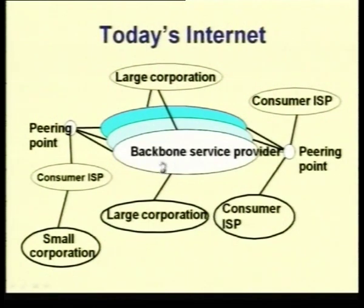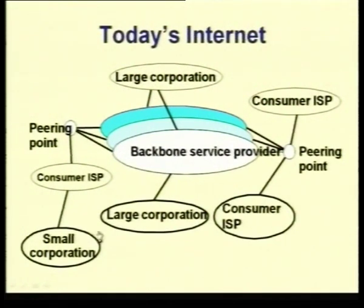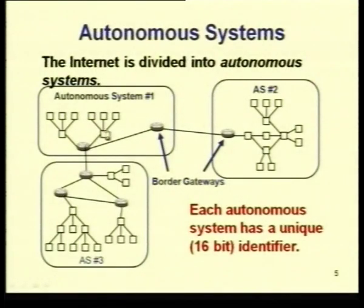Going back to the picture, a large corporation itself would be one autonomous system, the consumer ISP would be another autonomous system, and a consumer ISP connected to multiple smaller corporations could be yet another. You can look at different autonomous systems being interconnected — one more level of hierarchy, where within autonomous systems you have different networks connected by routers.